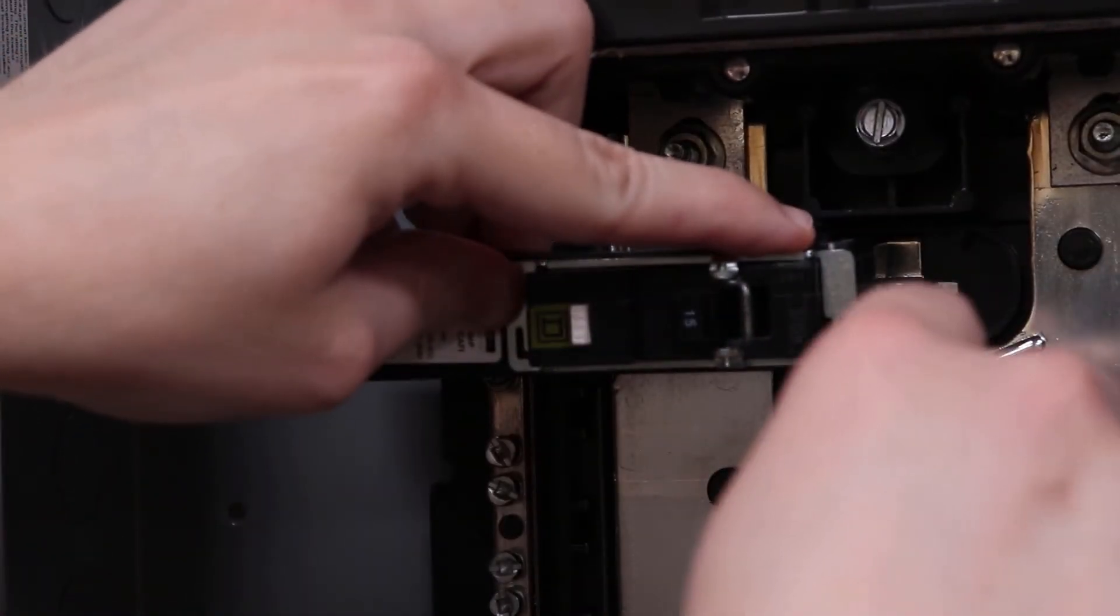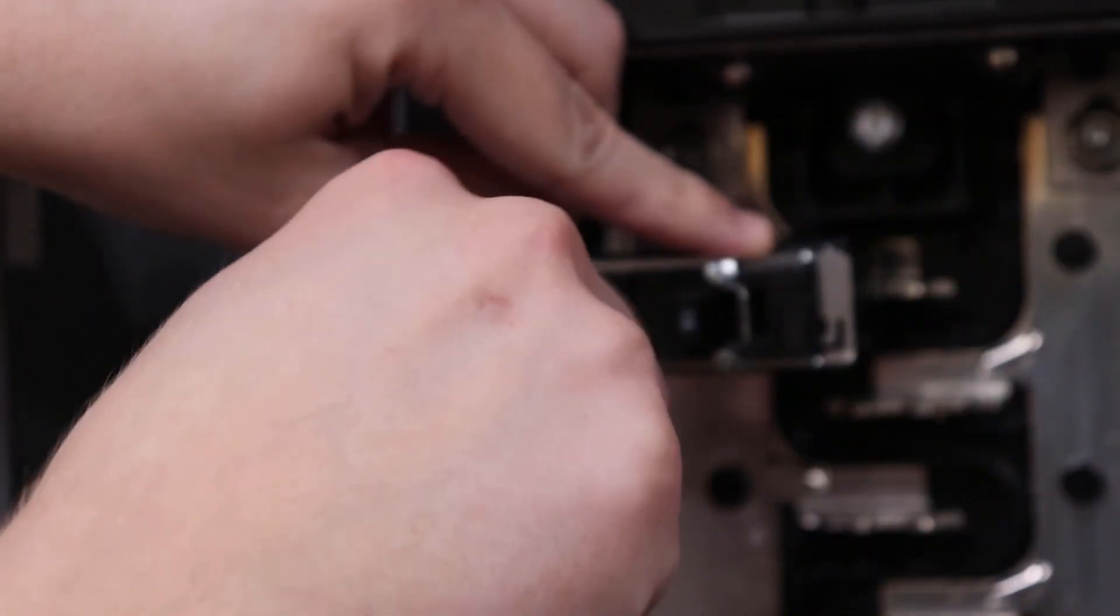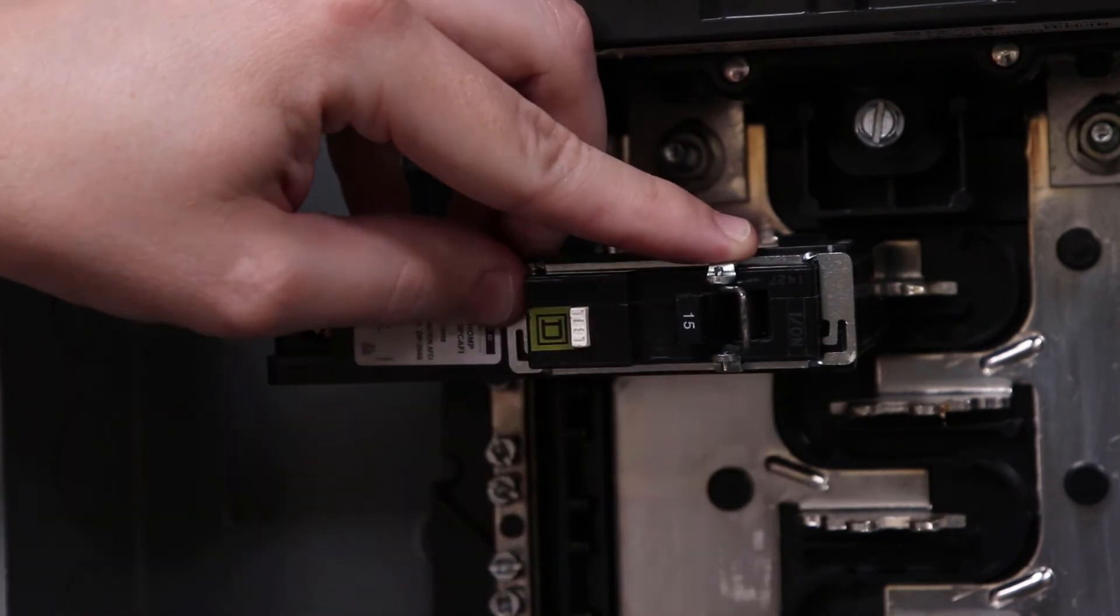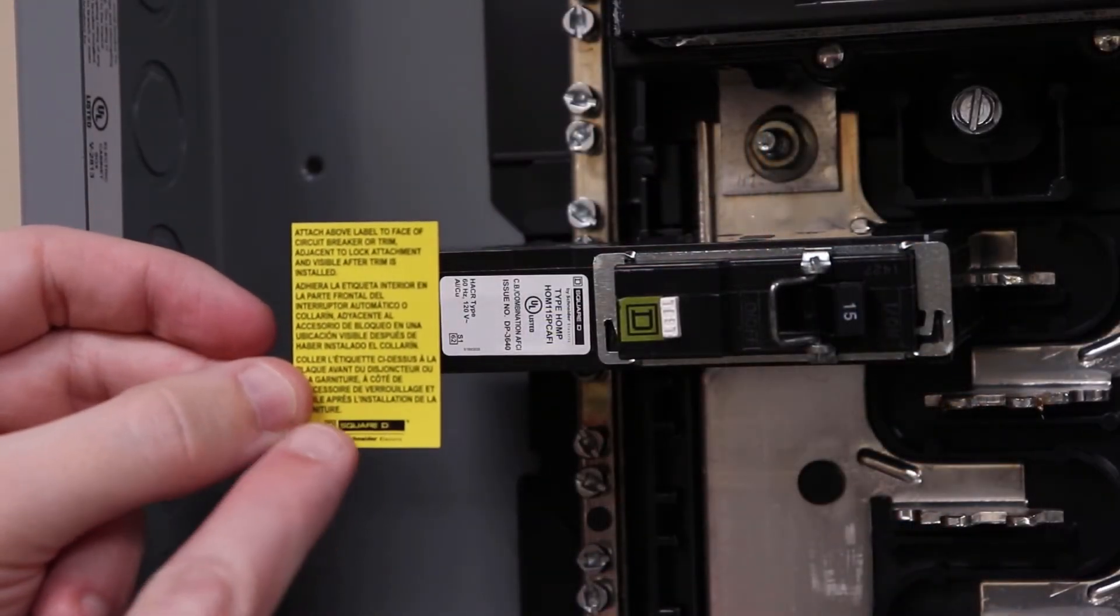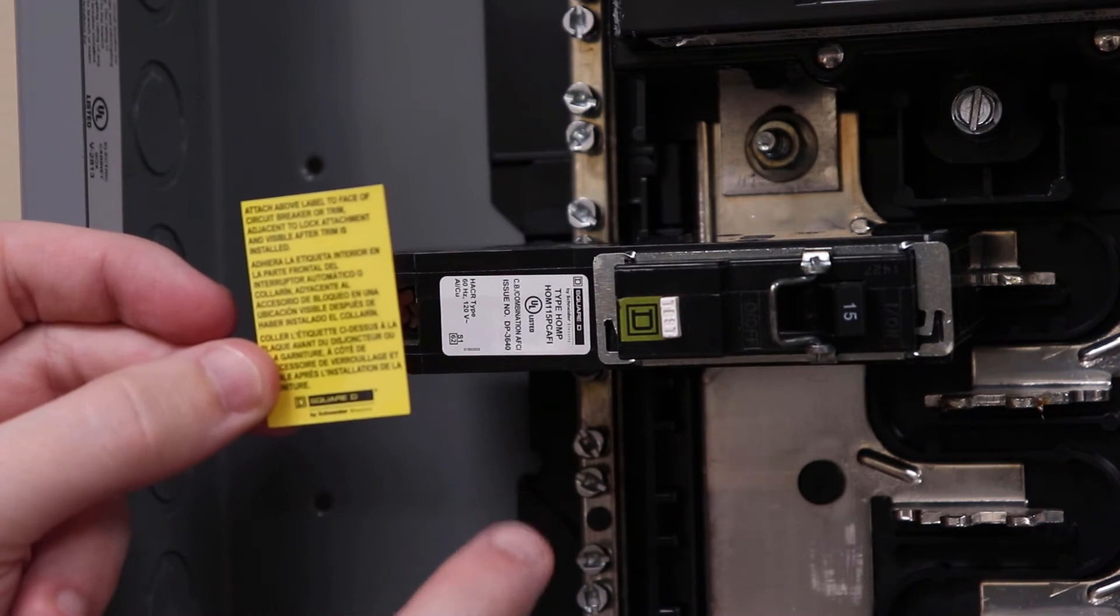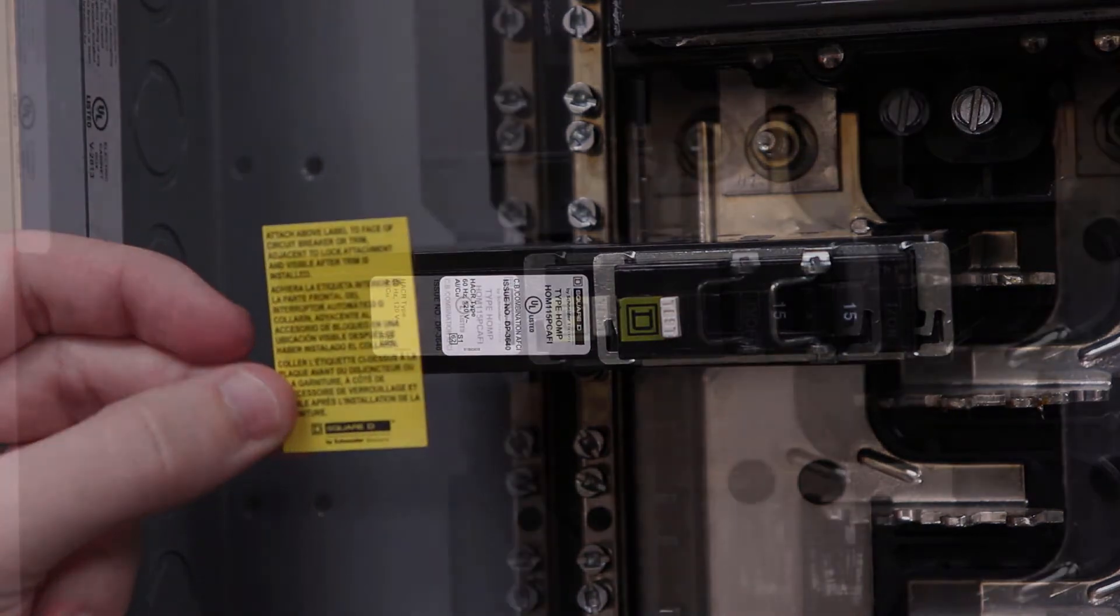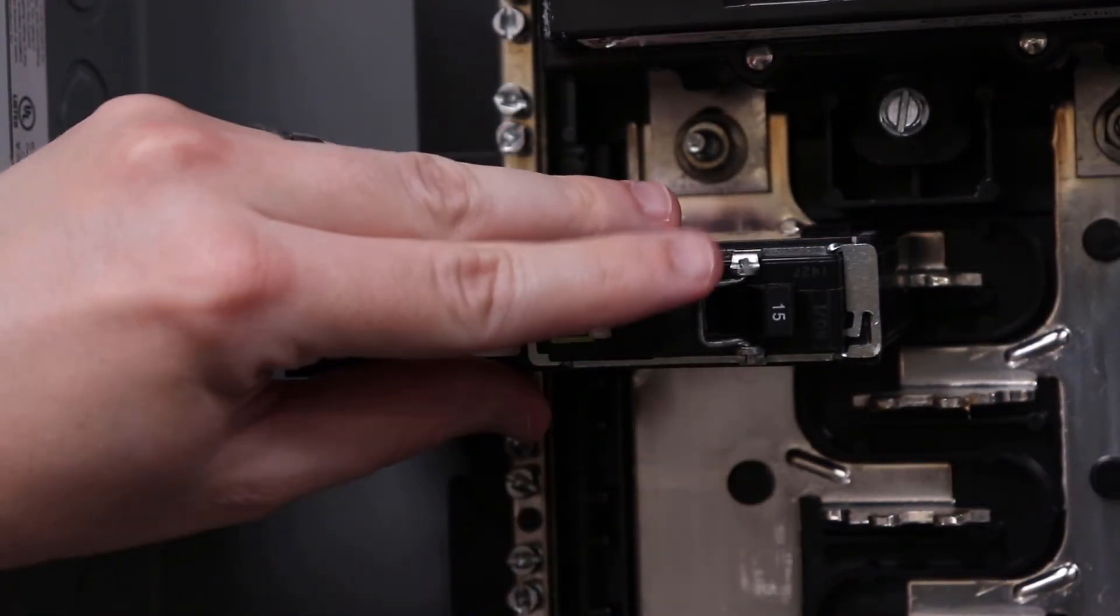Use a screwdriver to slide the locking tabs here and here into the slots on the breaker. Make sure to attach the label to either the face of the breaker or to the cover. You can now lock the circuit breaker in either the on or off position.